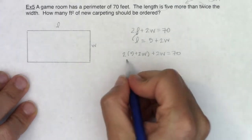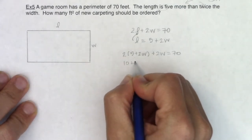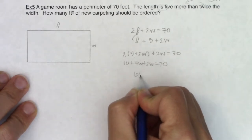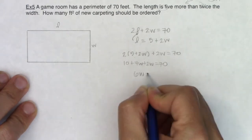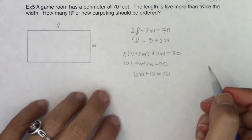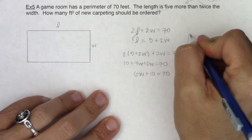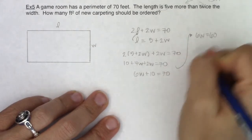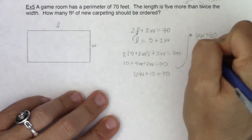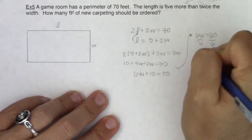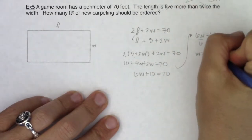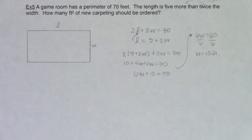Let me simplify the left side of this equation. We have 10 plus 4W plus 2W equals 70. That's 6W plus 10 equals 70. I see 6W equals 60. Divide both sides by 6 and I get W equals 10, and in this case it's 10 feet.